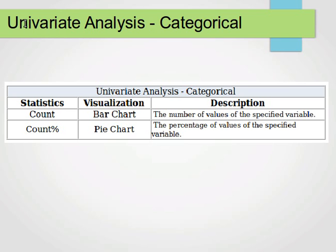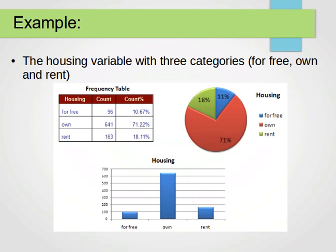For univariate categorical variables, we can compute counts and use bar charts to visualize them, or compute percentages and use pie charts to visualize them. For a bar chart we use the number of values of the specified variable, and for a pie chart we use the percentage of the specified variable. Let's look at an example from Professor Sayed's website.